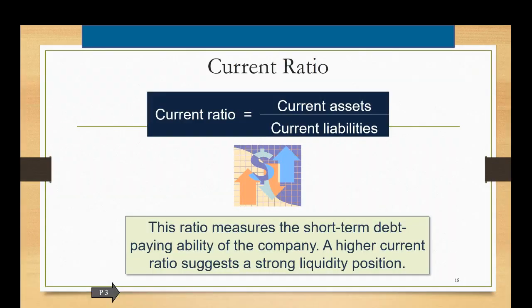The current ratio is calculated as the current assets divided by the current liabilities. This ratio measures the short-term debt paying ability of the company. A higher current ratio suggests a strong liquidity position. Banks like to see current ratios averaging two to one which means for every dollar in current debt they have two dollars in current assets with which to pay it off. Your classified balance sheet already has the categories of current assets and current liabilities so these ratios should not be hard to calculate.